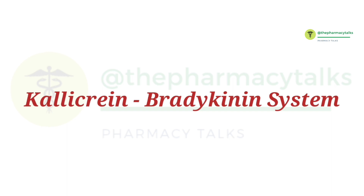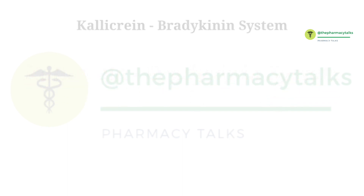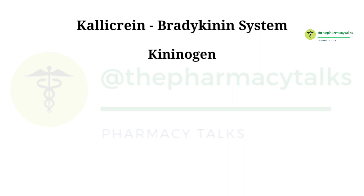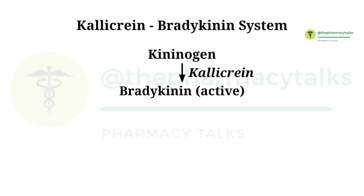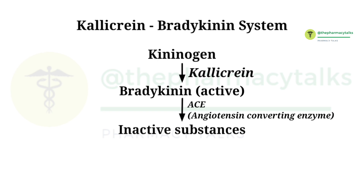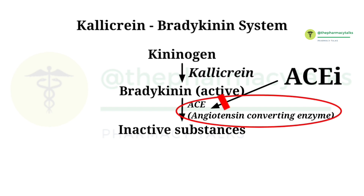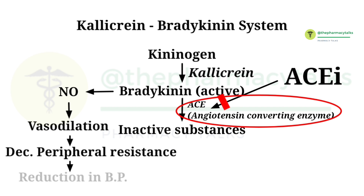Now let's also understand the mechanism of the kallikrein-bradykinin system under normal conditions. Kininogens are glycoproteins synthesized in endothelial cells and produced mostly by the liver. Kininogen is converted to bradykinin in the presence of kallikrein, an enzyme secreted in the pancreas or other tissues. Another role of ACE is to cause the breakdown of bradykinin into inactive substances, but in the presence of ACE inhibitors, there will be no such breakdown. Since bradykinin is a very potent vasodilator that exerts its vasodilatory actions by causing endothelial release of nitric oxide, there will be more vasodilation, decreased peripheral resistance, and hence a reduction in blood pressure.